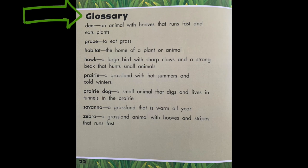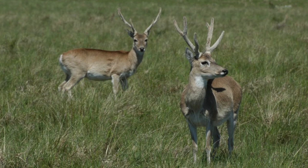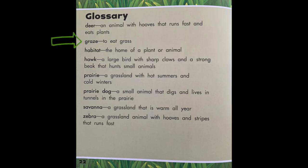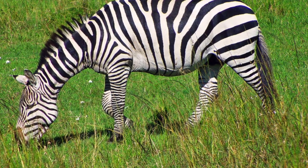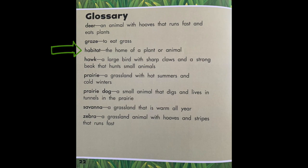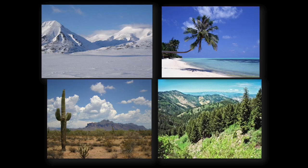Here's the glossary. Remember, the glossary tells us what certain words mean or their definition. The first word is deer — an animal with hooves that runs fast and eats plants. The next word is graze — graze means to eat grass. Habitat — the home of a plant or animal. That's what we're learning all about this unit.